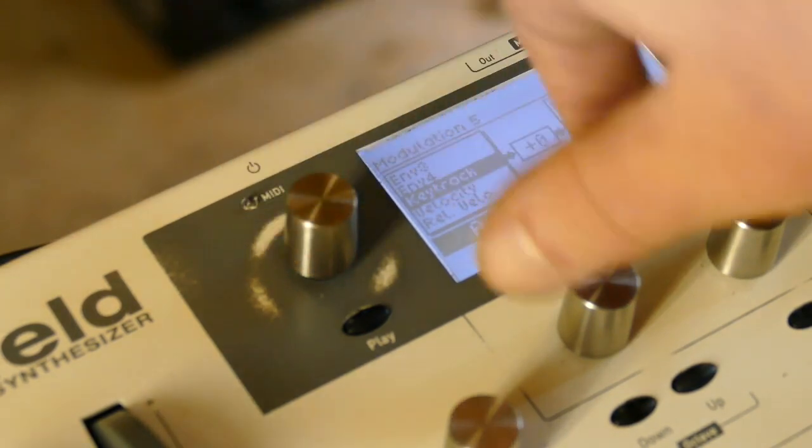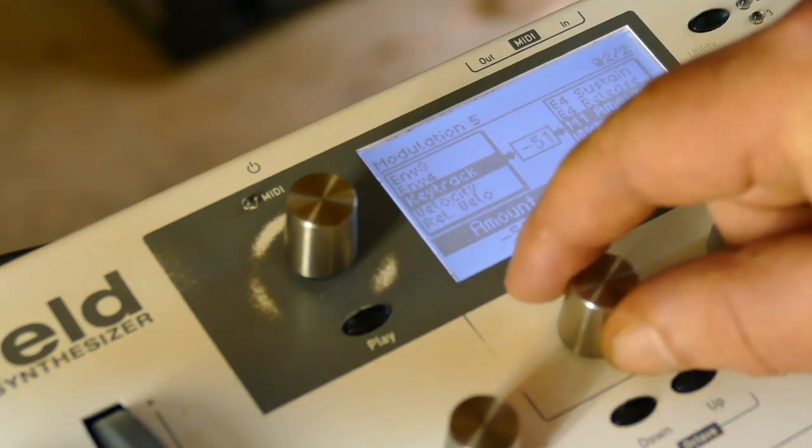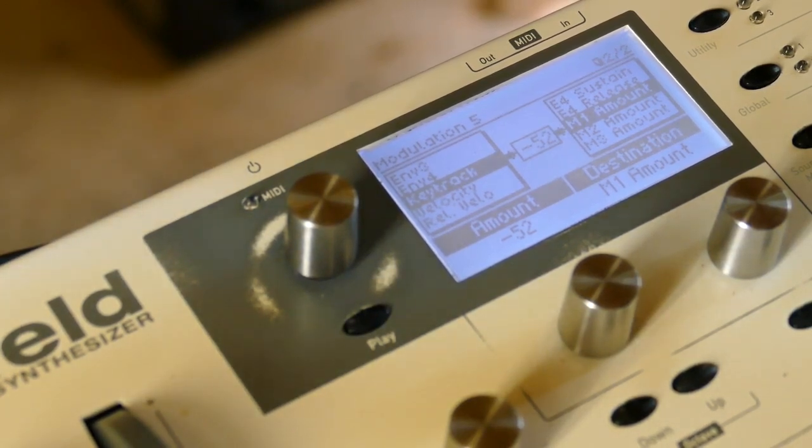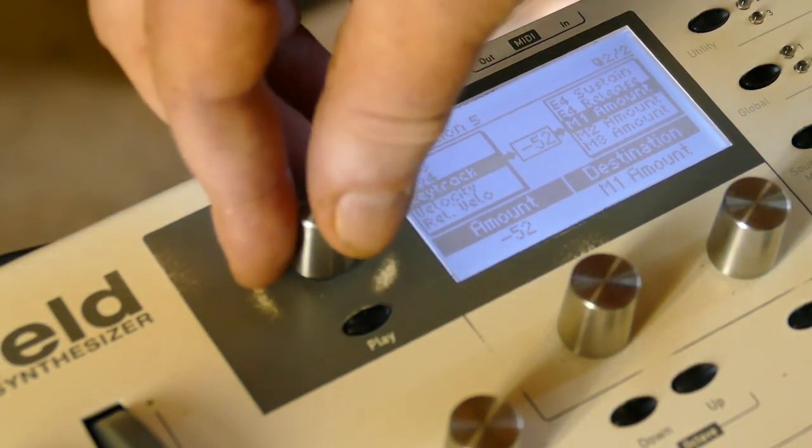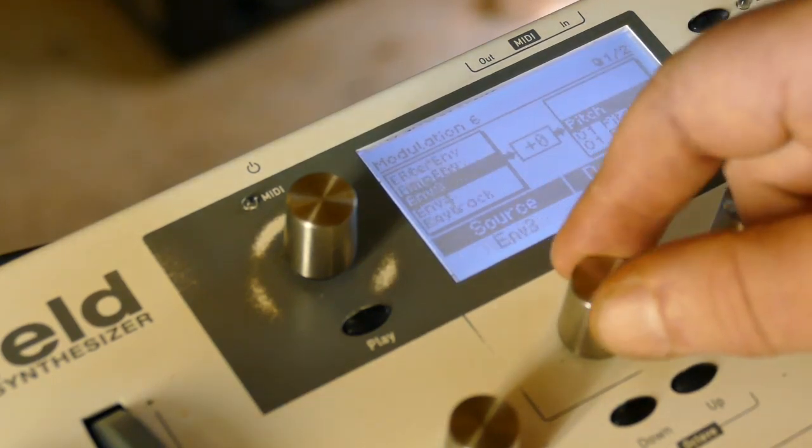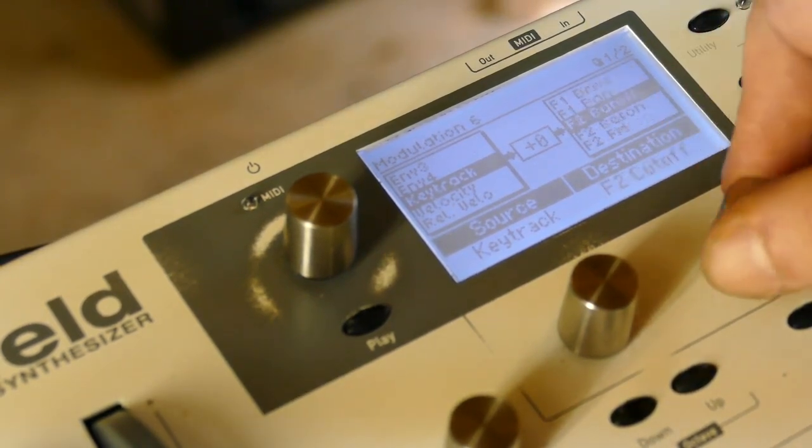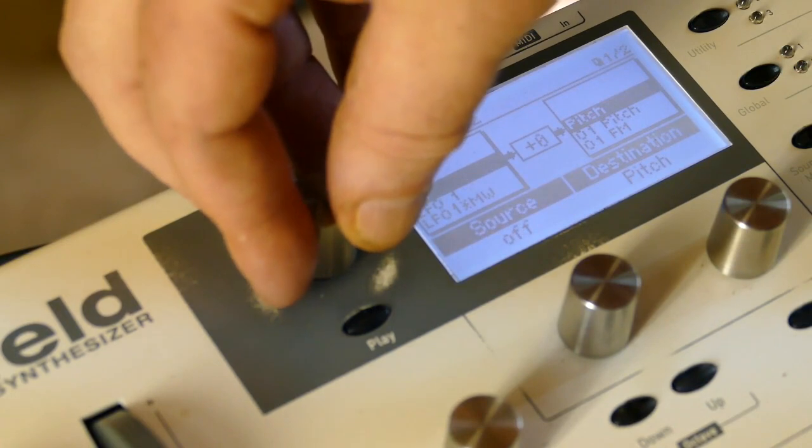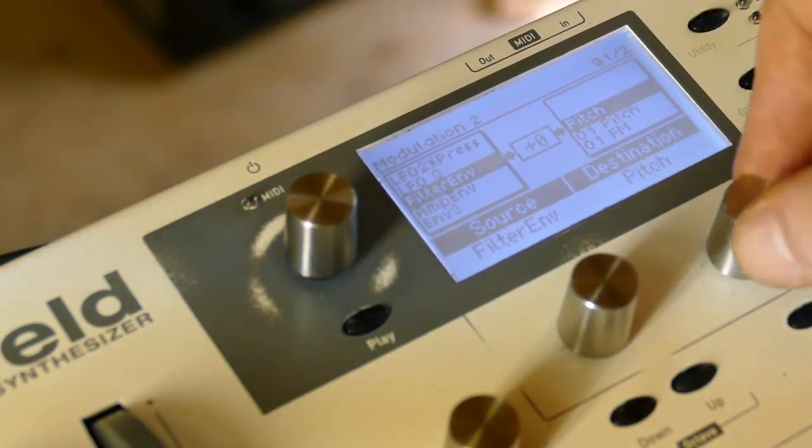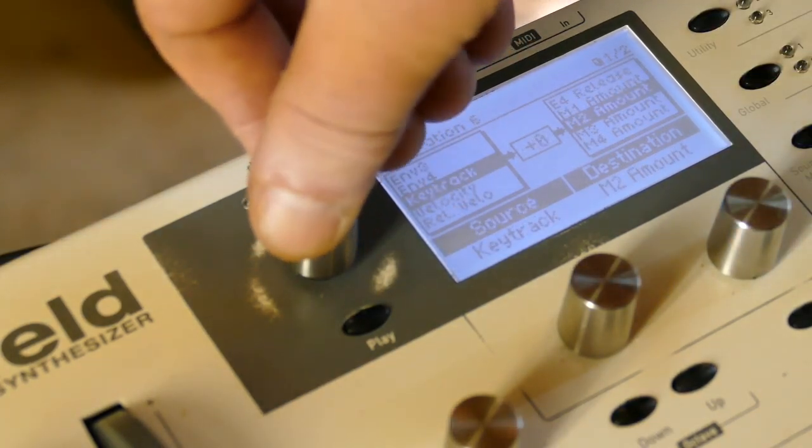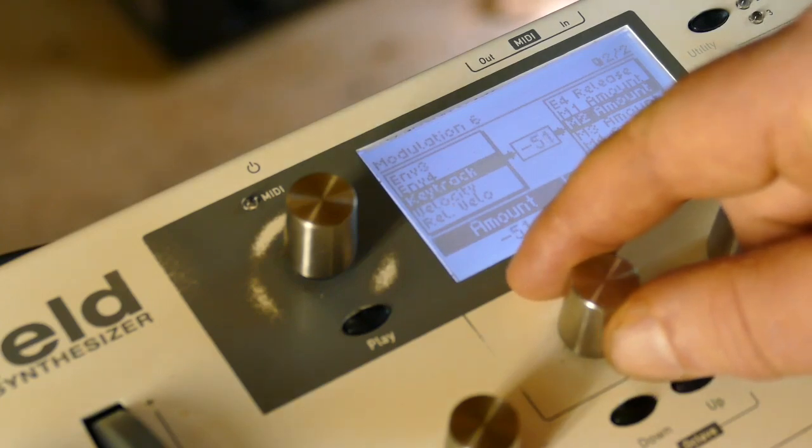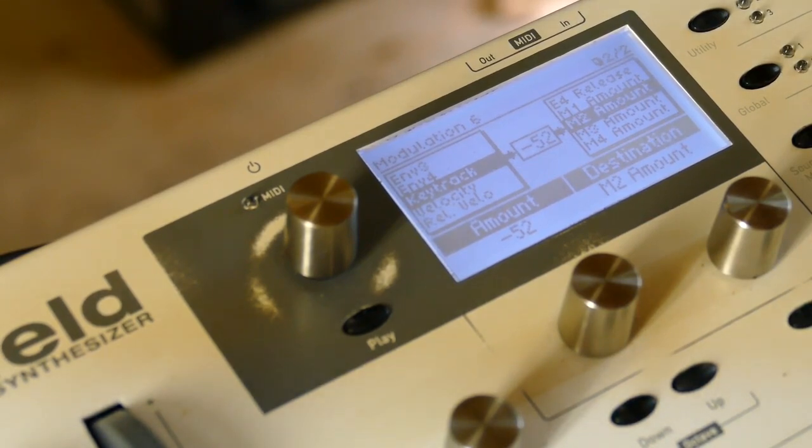Then over back on 5, I'll set it at minus 52. That is still too much triangle because that's not being attenuated. So on mod slot 6, I'm going to say key track controls oscillator 2 amount. Then on mod slot 2, I'm going to say filter envelope controls oscillator 2 level, and I'll take that down minus 52 as well. This really only works if using the filter envelope to attenuate.